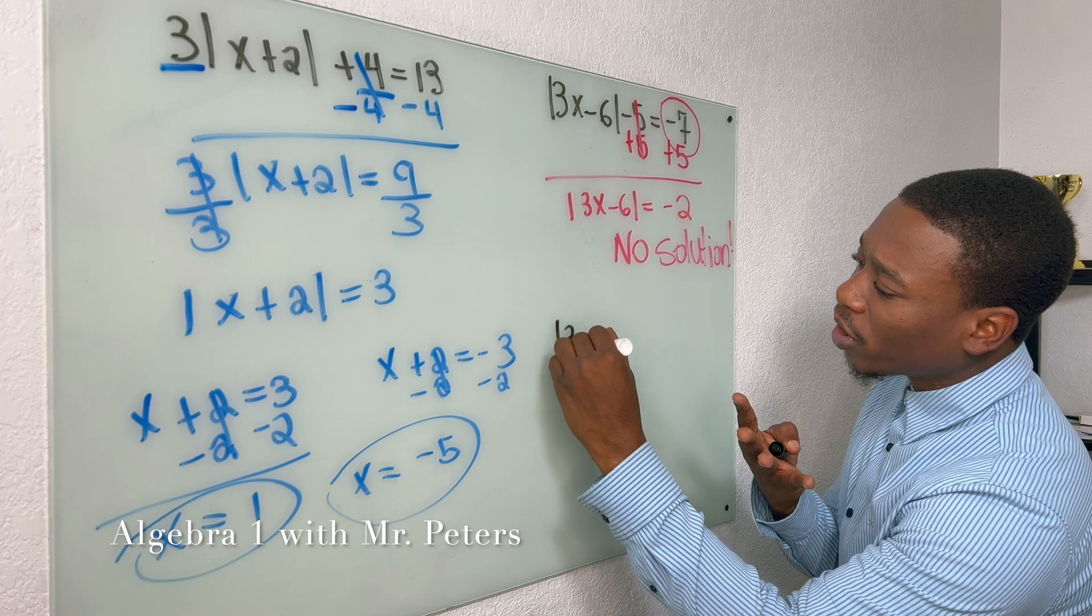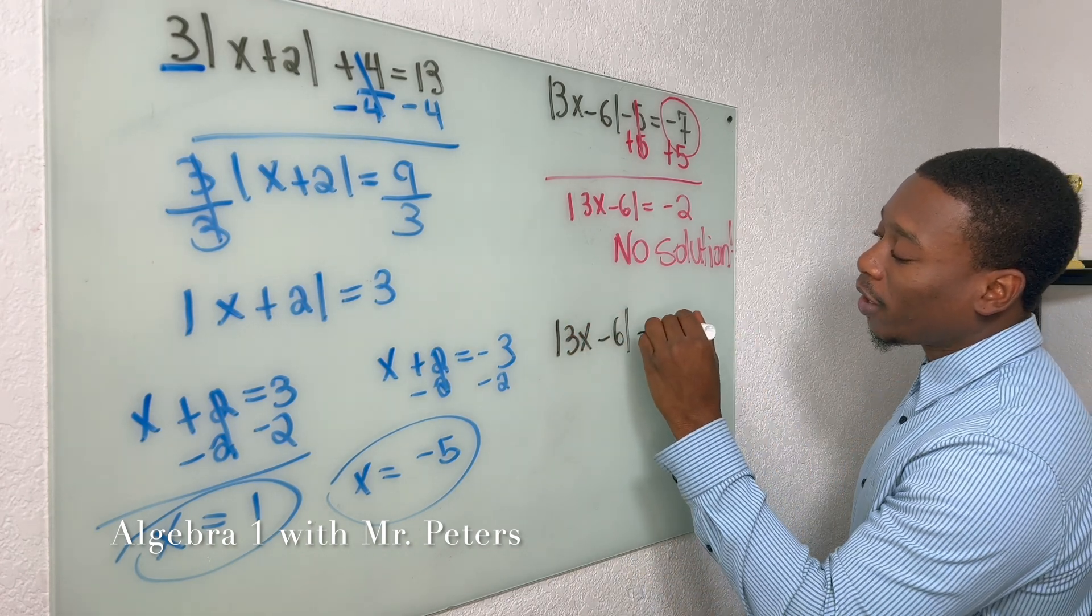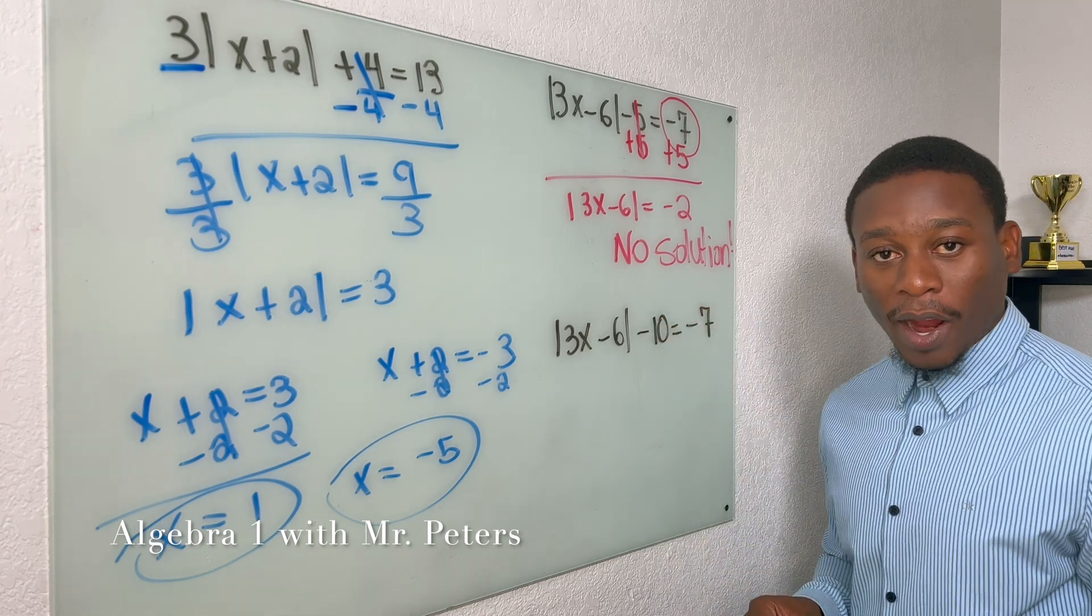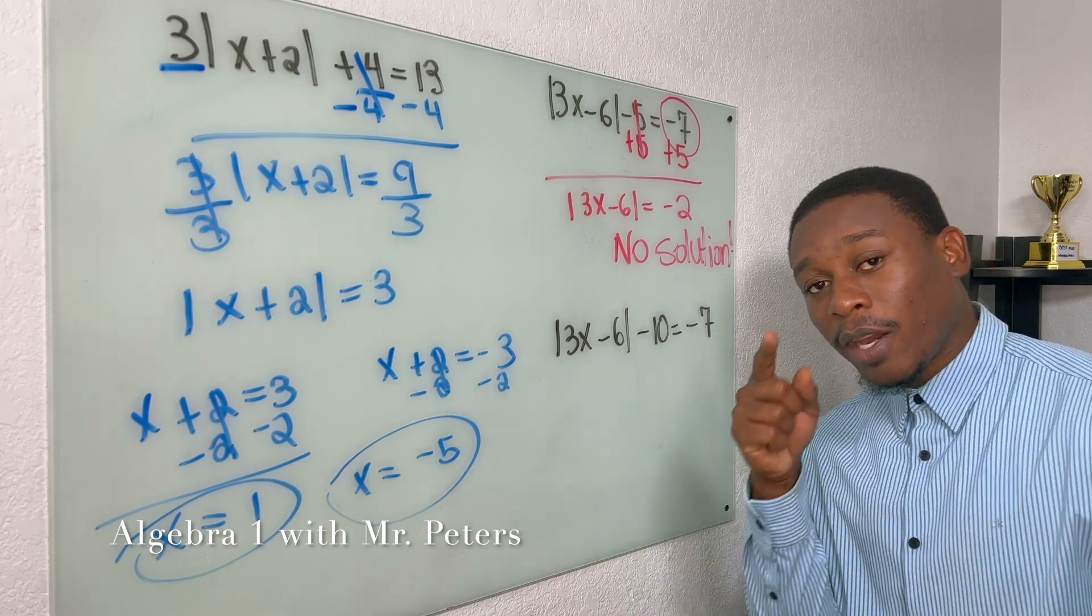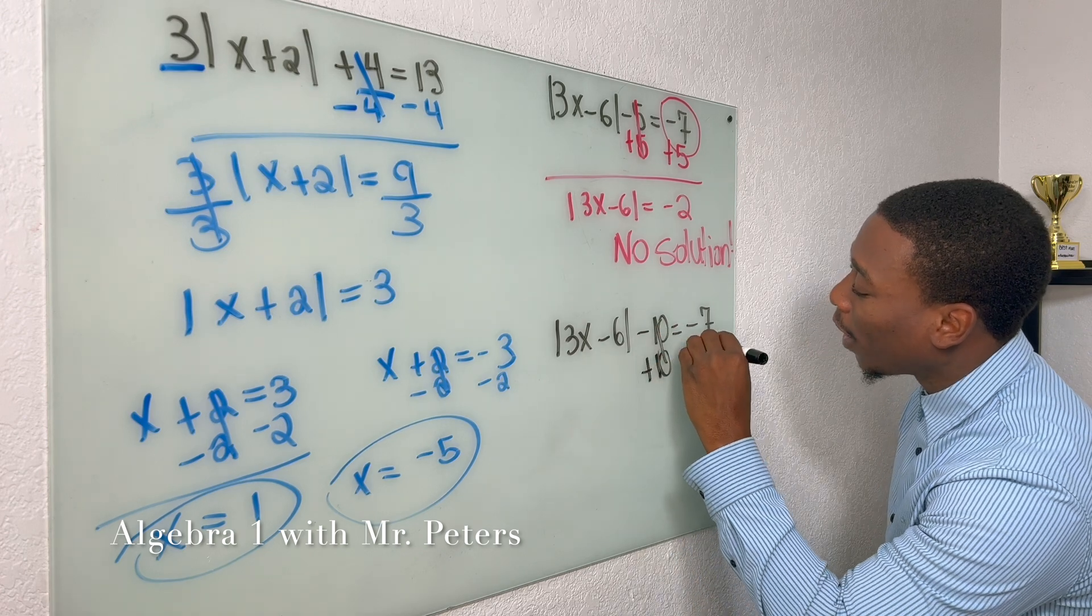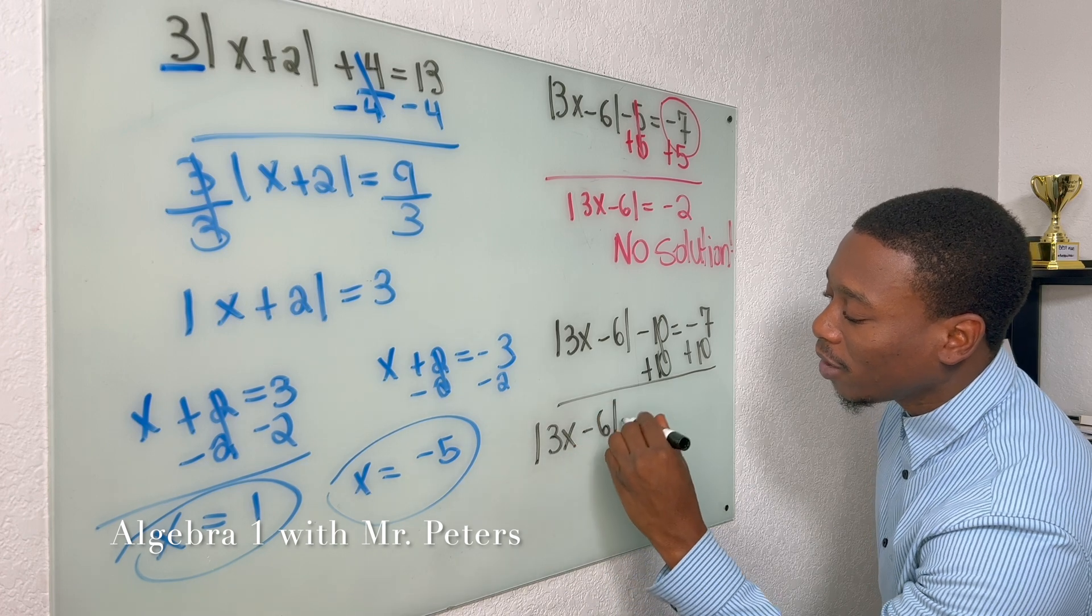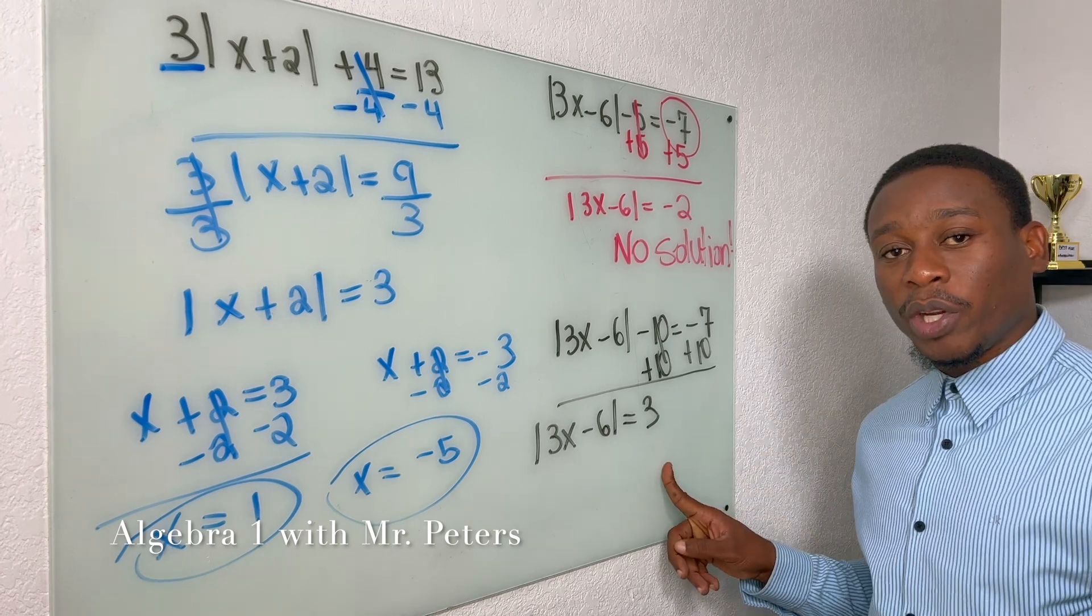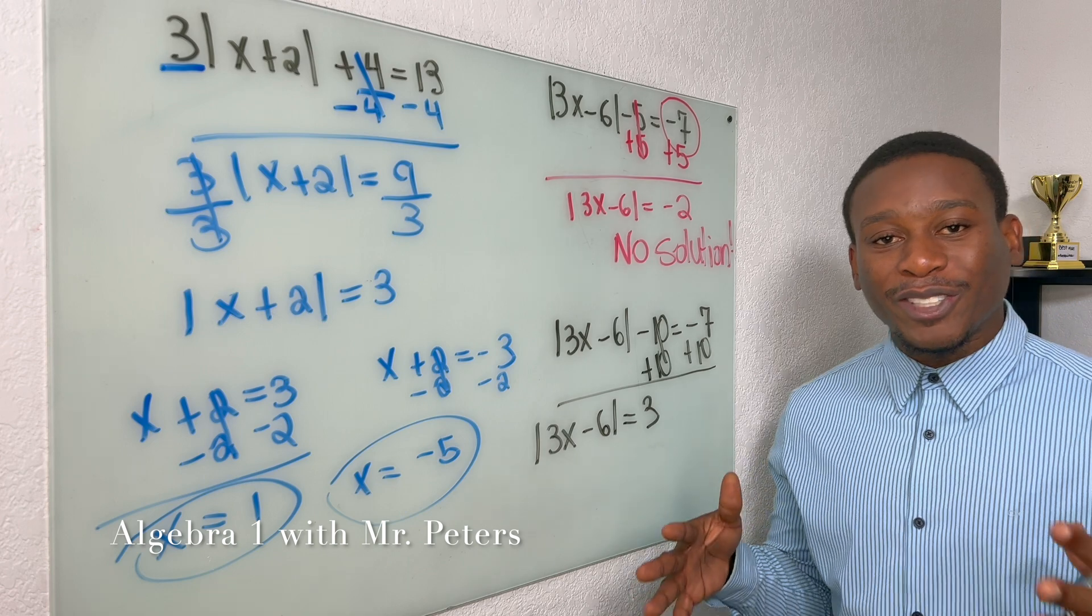Let's say the problem was something like this: we had the same exact problem but now we switched five with let's say ten, and this is equal to negative seven. When we look at this problem, we can find the absolute value, and the reason why is because when we add ten on both sides, we're now going to have the absolute value of three x minus six, which will be equal to positive three. Now that we have a positive three, we could drop these brackets and then we could create our two equations.